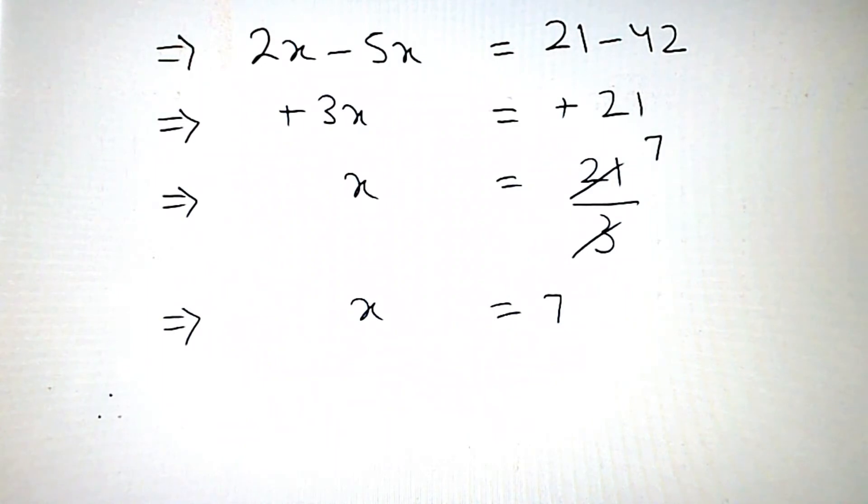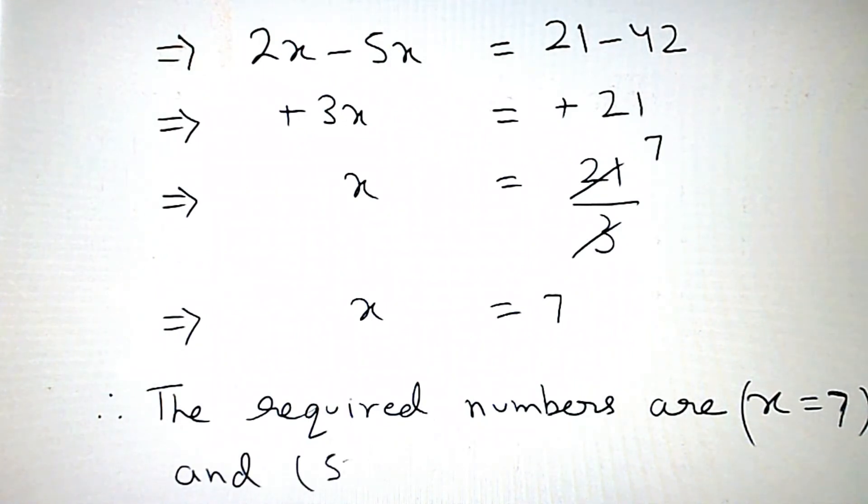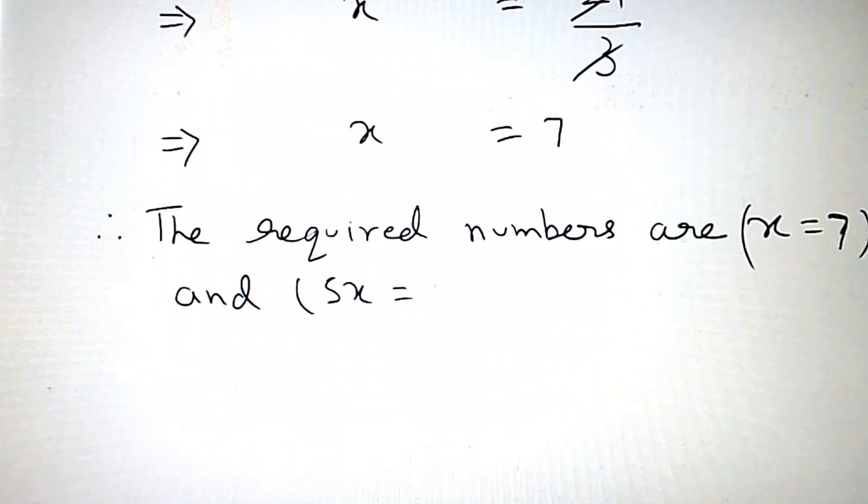Therefore, the required numbers are x and 5x. So x value is 7, and 5x is 5 times 7, which equals 35.